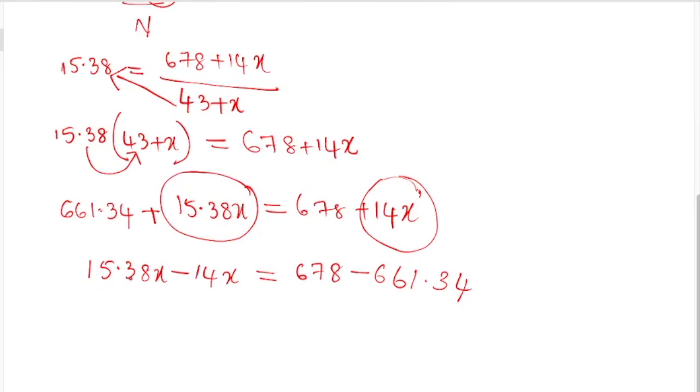15.38 minus 14 is 1.38x equals 678 minus 661.34, which is 16.66. So x equals 16.66 divided by 1.38.